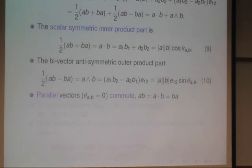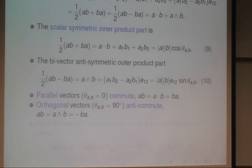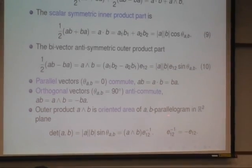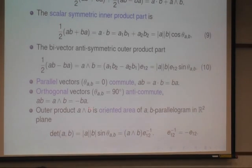Now for parallel vectors, the cosine is 1, they commute because you only have an inner product part. For orthogonal vectors, it anti-commutes. You only have the sine part which is plus 1 if the angle is 90 degrees. And the outer product is the oriented area of the parallelogram in the plane spanned by the vectors A and B. This length of A and length of B times sine theta is exactly the formula for the area of a parallelogram. You can compute it by taking this value and multiplying with the inverse of E12, which is simply minus E12.